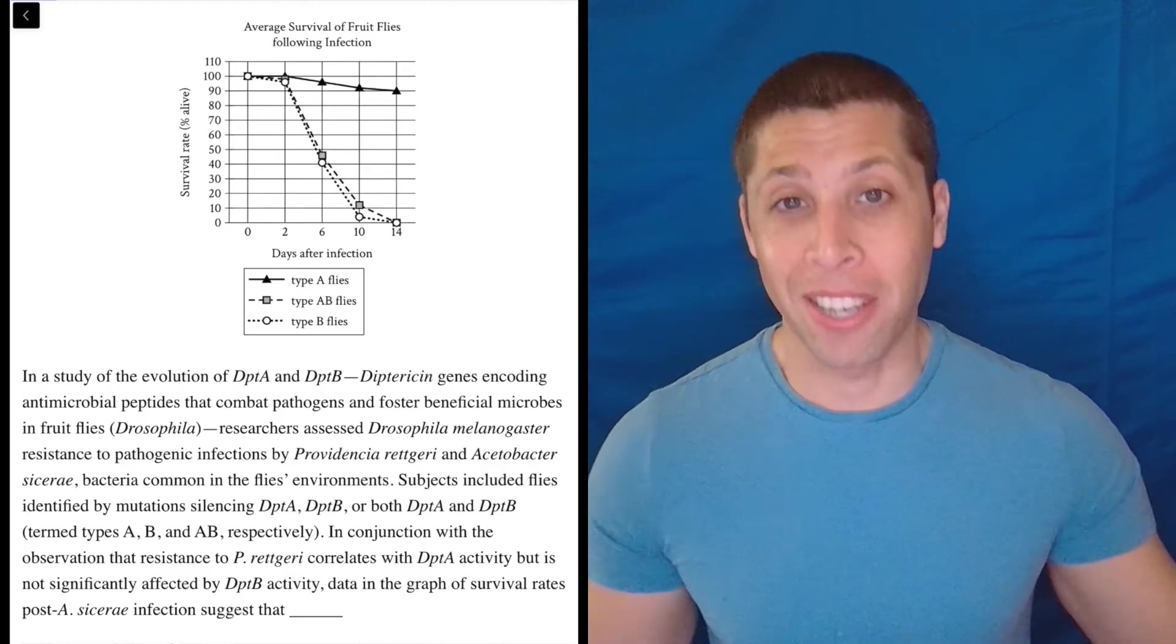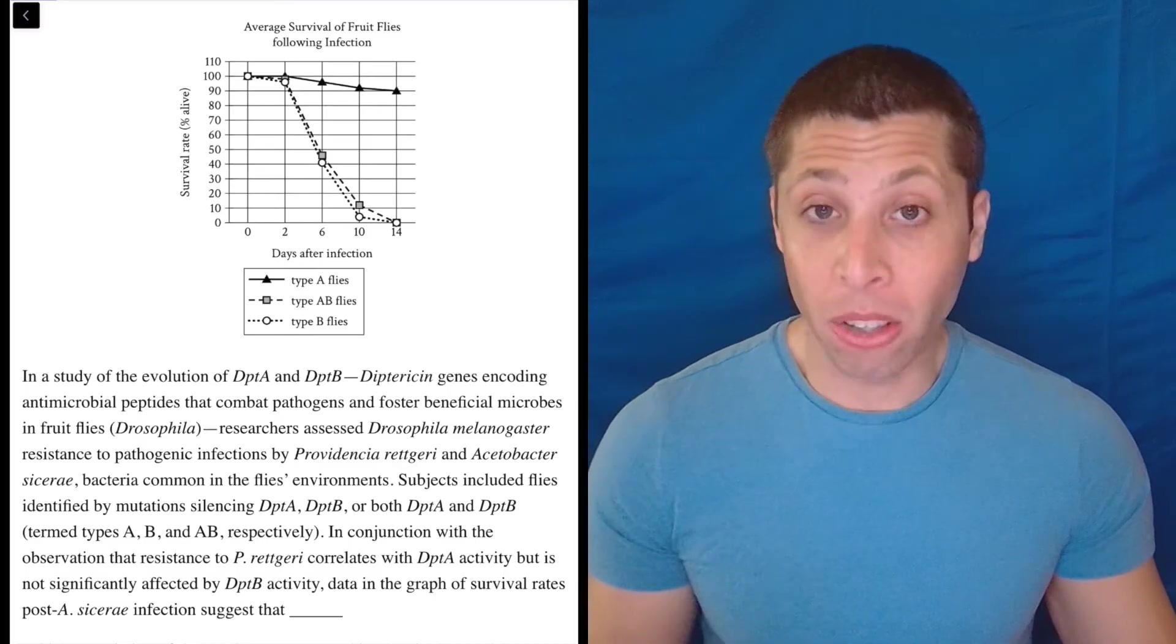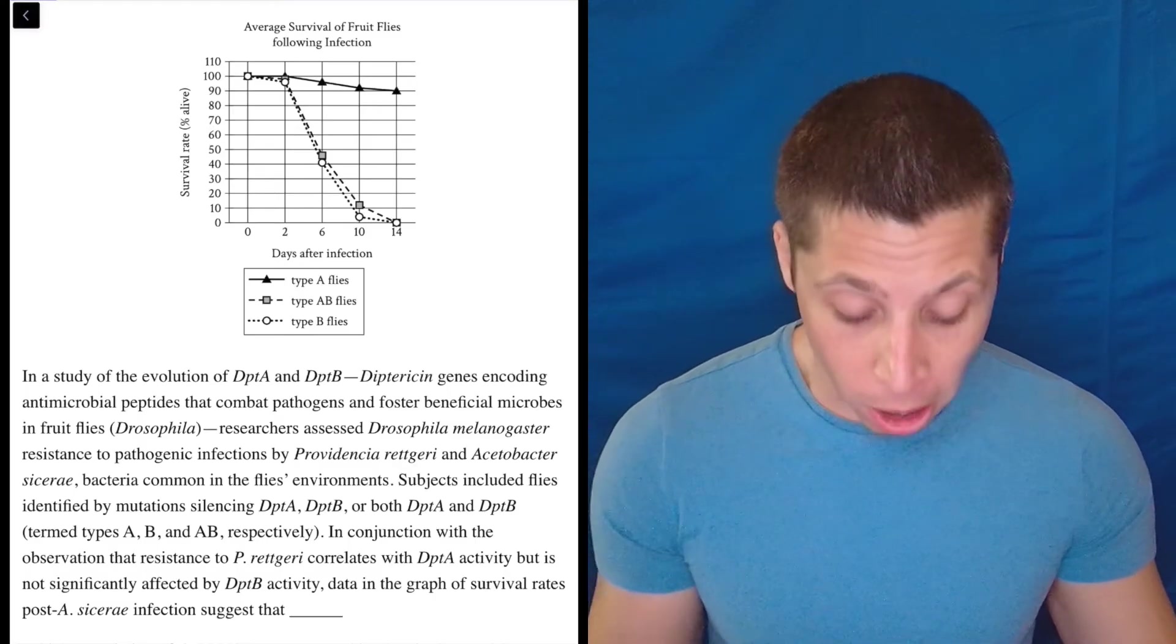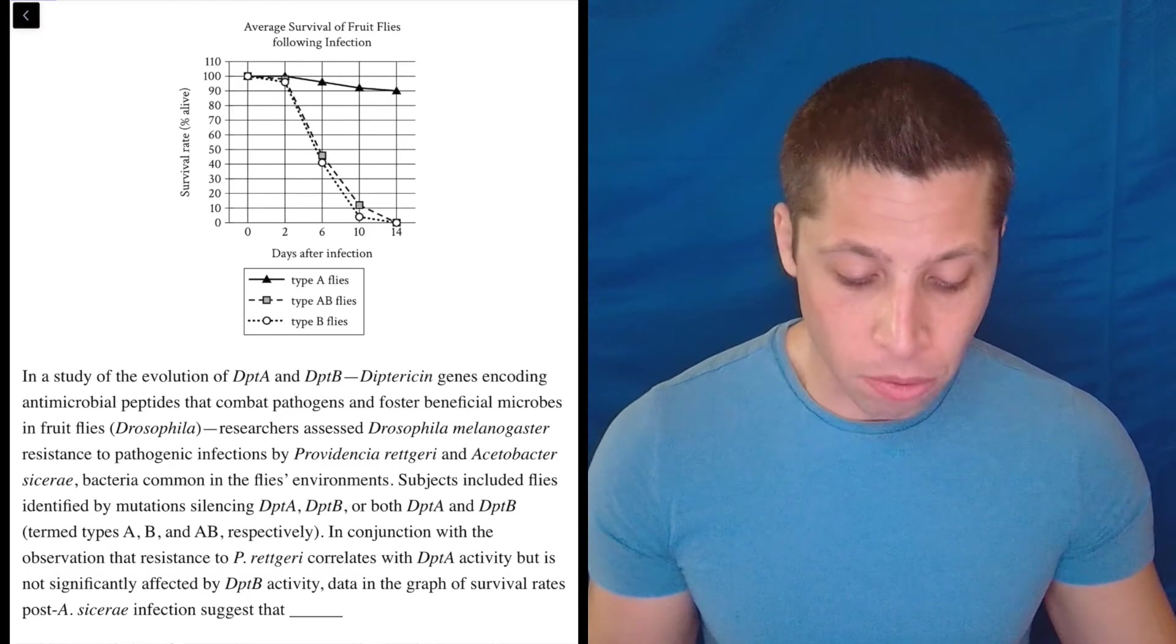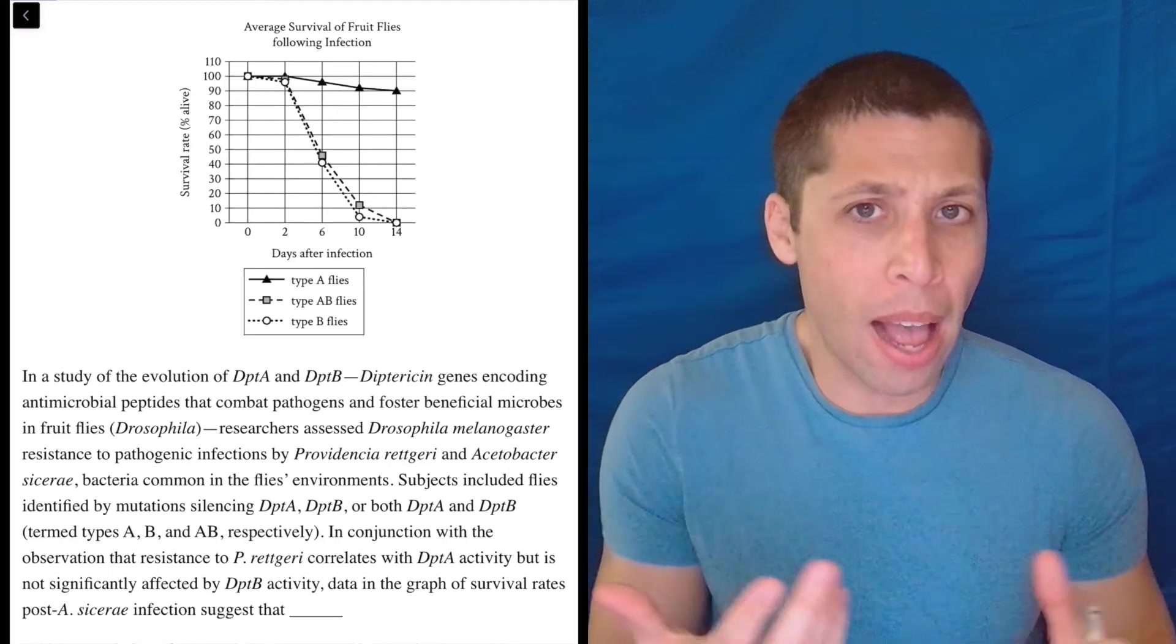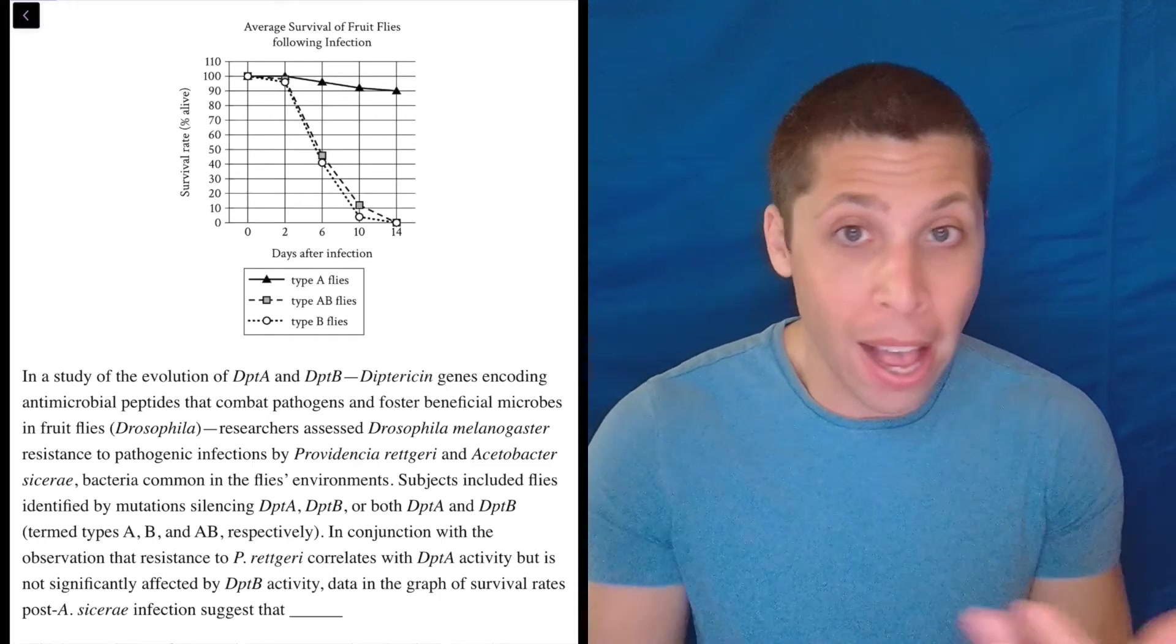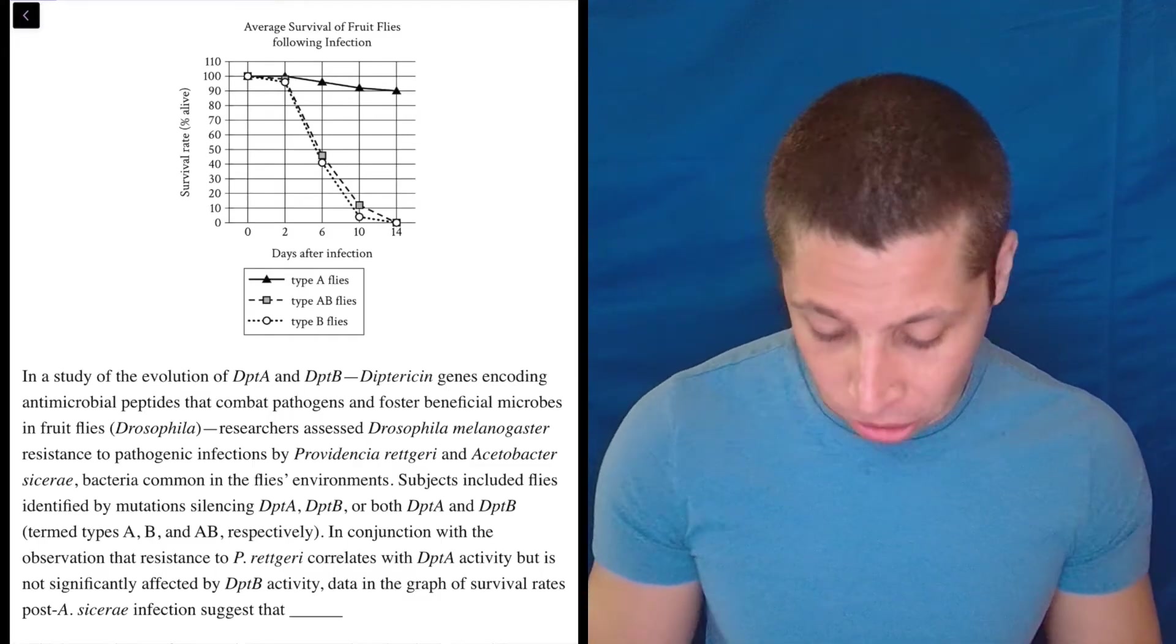So I already don't like the graph and chart questions. I find them very time consuming and very confusing. But this one in particular looks scary. So it's okay to make a question like this part of your sacrifice plan. But if you have time and you're able to get to it, how can you sort through this? Well, my advice is don't bother trying to interpret the graph from the start, because we don't really know what it means for something to be a type A fly or a type AB fly.